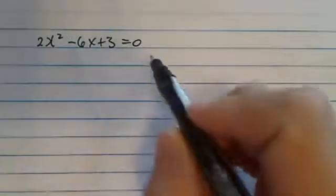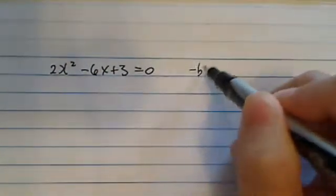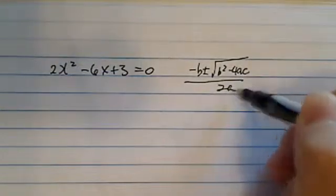Given a quadratic equation, we're going to try to solve this one. This one you can't factor, so we're actually going to use the quadratic formula: minus b plus or minus the square root of b squared minus 4ac, divided by 2a.